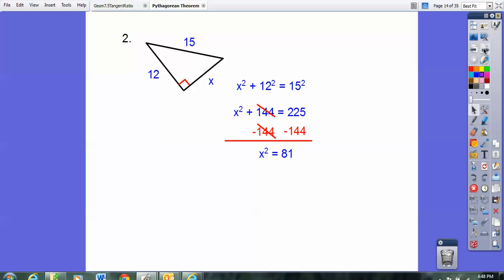Subtract 144, and you get X squared equals 81. So when I square root 81, I hope you guys know it's 9, square root of 81 is 9.